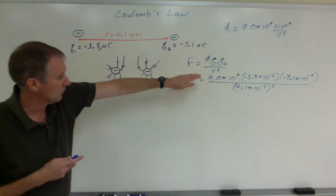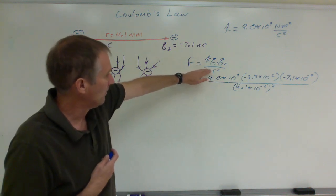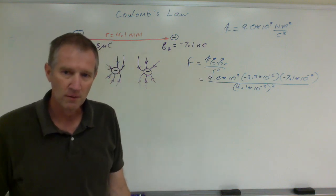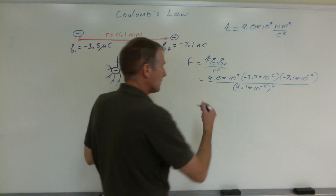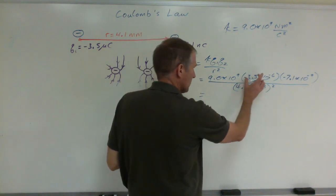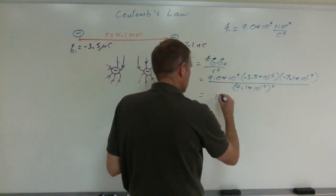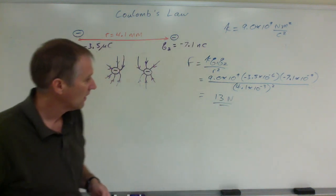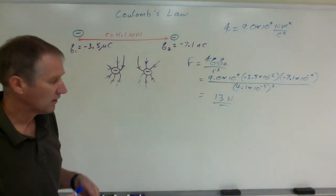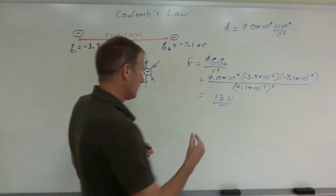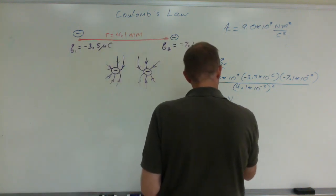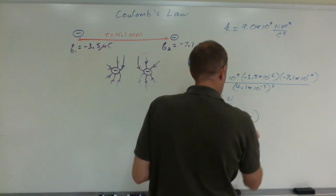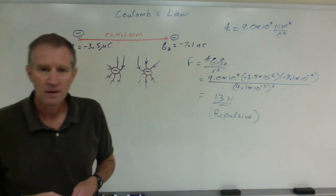Whenever we're calculating forces using their raw equations like in gravity or Coulomb's Law, the r is always squared in the denominator. When you calculate this out, you get a positive answer because the negative times the negative gives you positive 13 newtons, good to two significant digits. And positive force tells us that it's repulsive. Okay, done.